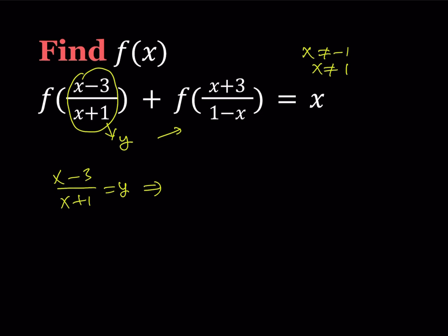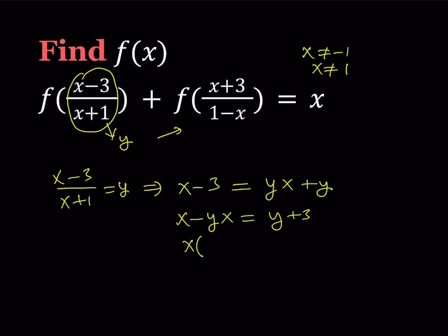From here, if you cross-multiply, you get x minus 3 equals yx plus y. Let's go ahead and collect the x terms on the same side: x minus yx is equal to y plus 3. From here, we can factor out x to get x times (1 minus y). Finally, divide by (1 minus y) and you get x in terms of y: x equals (y plus 3) over (1 minus y).